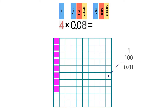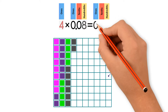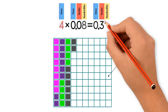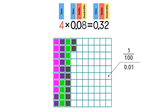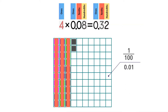So we shade four sets of eight squares. Now we add them up — we get 32 squares, or 32 hundredths. We can also say we have three tenths and two hundredths.